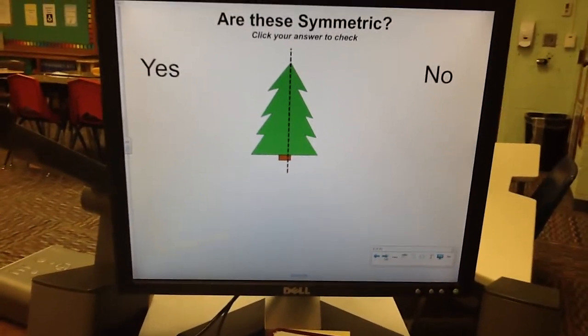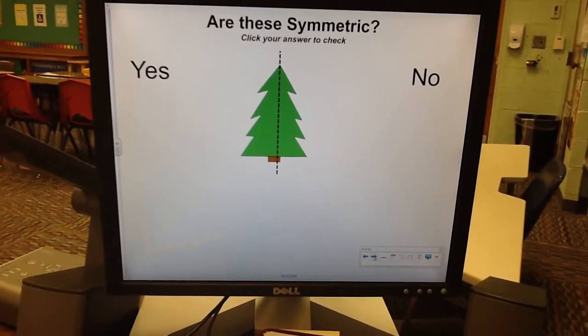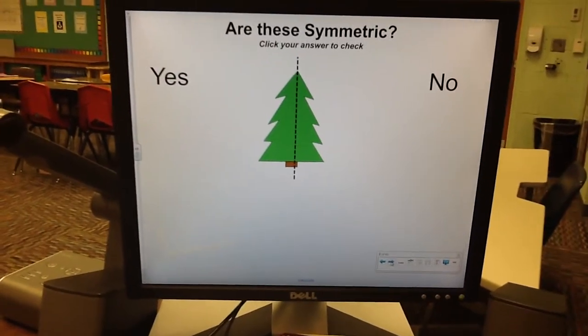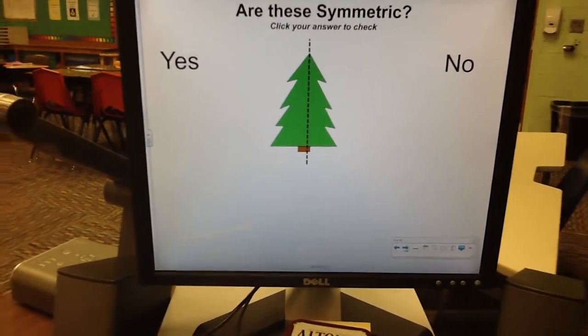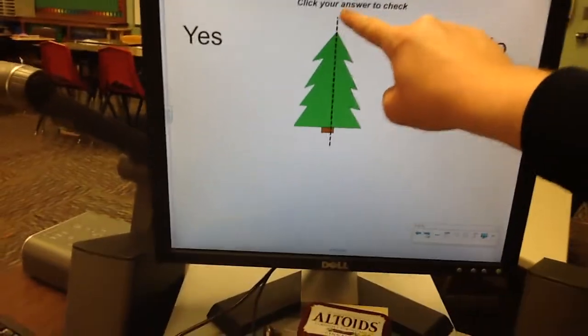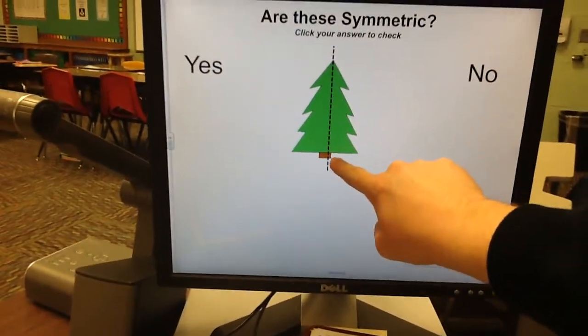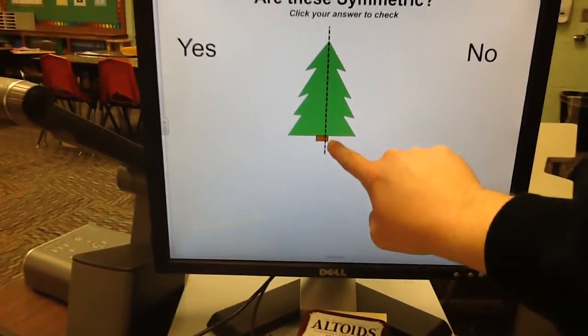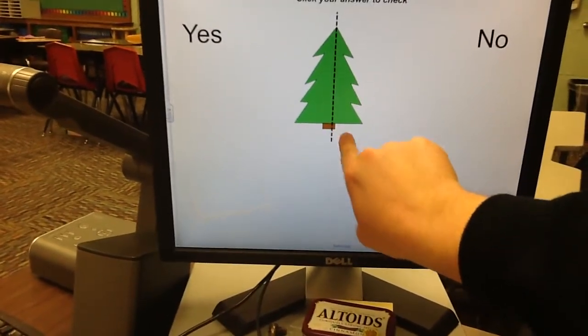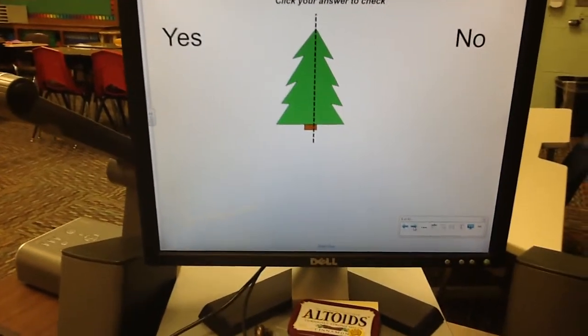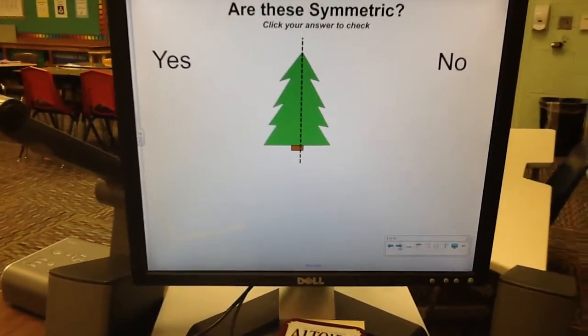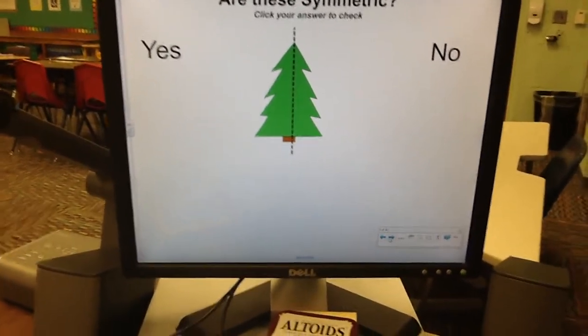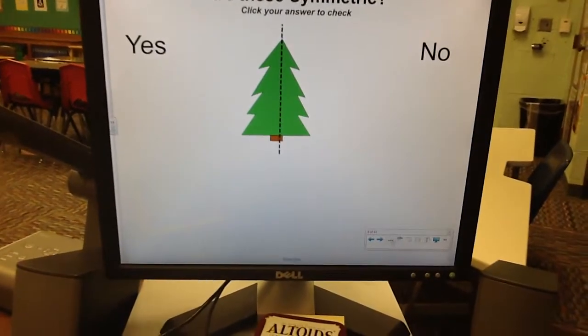What about the Christmas tree? Well, if we folded it right down the middle, would it match? It looks like it might, but if you look closely, look. The tree stump, there's a lot more of it on the left of the line than there is on the right. So that is actually not a line of symmetry, and that's why when you're looking at lines of symmetry, you have to look very closely.